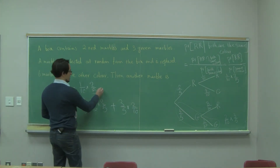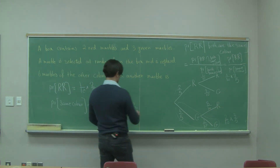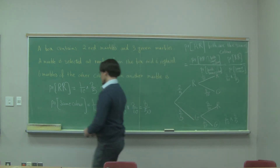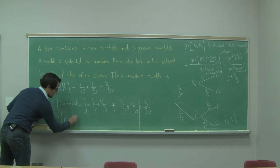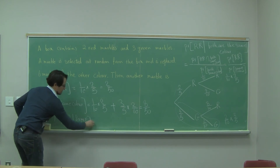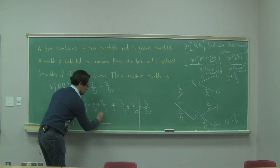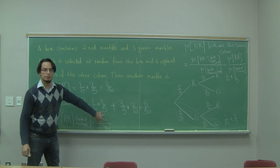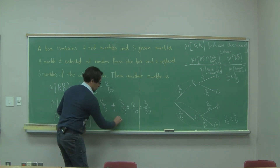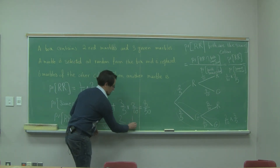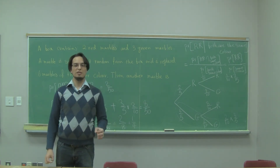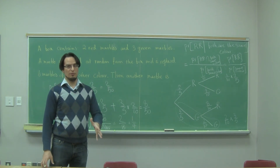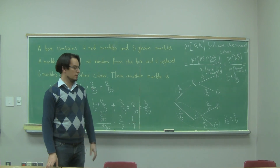The probability of both red is 2/50, and the probability of both same color is 2/50 + 6/50 = 8/50. The conditional probability — probability of red-red given same color — is (2/50) ÷ (8/50). Canceling the 50s, I get 2/8, which simplifies to 1/4. The probability that both marbles are red, given that both were the same color, is 1/4.